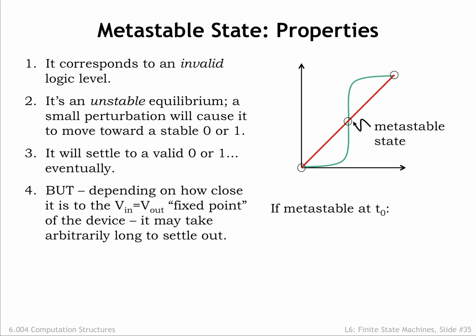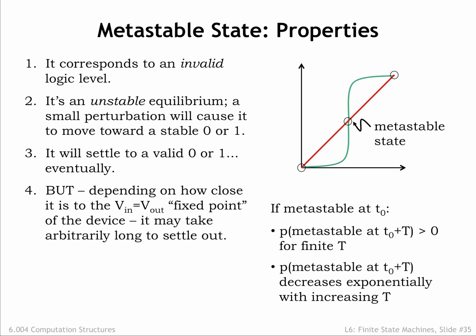If the system goes metastable at some point in time, then there's a non-zero probability that the system will still be metastable after some interval T, for any finite choice of T. The good news is that the probability of being metastable at the end of the interval decreases exponentially with increasing T.